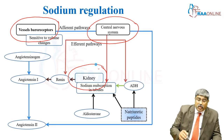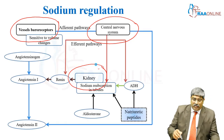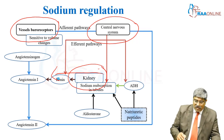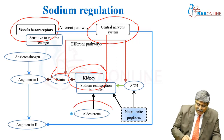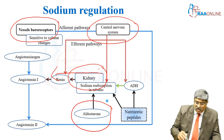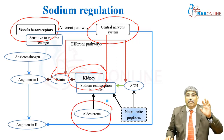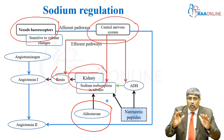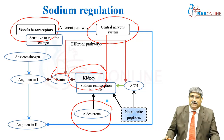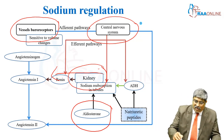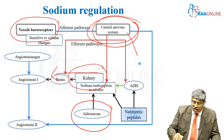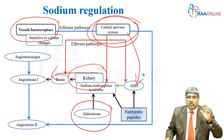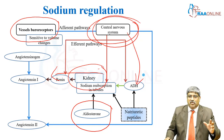The kidney regulates sodium balance through the renin-angiotensin pathway. Aldosterone is the main mechanism for sodium and water retention. From the central nervous system, you have the antidiuretic hormone through arginine vasopressin.